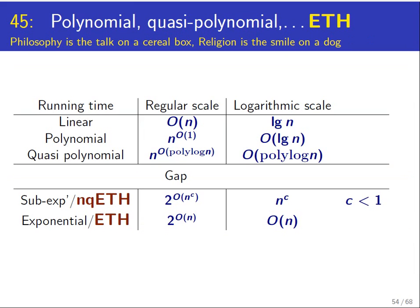To see why the ETH is interesting, it's useful to look at running times in the logarithmic scale. Linear running time is just log base 2 of n, polynomial is O(log n), quasi-polynomial time is O(polylog n), and then there is this huge gap. You get to sub-exponential time which is n to the power c in the logarithmic scale, and then you have O(n) which is exponential time. What ETH says is that 3SAT and SAT in general is on the other side of this monstrous gap, which is a pretty powerful property.